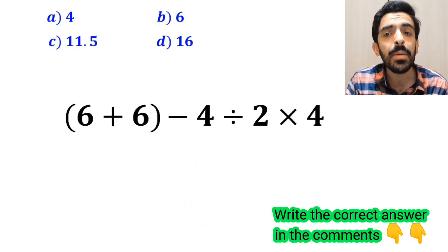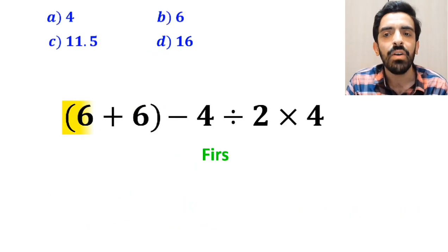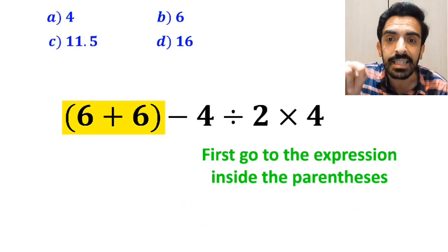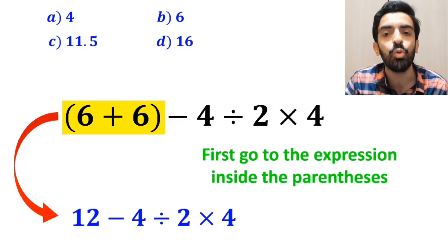Also, some other people when solving this question first go for the expression inside the parenthesis and rewrite this expression as 12 minus 4 divided by 2 then times 4.